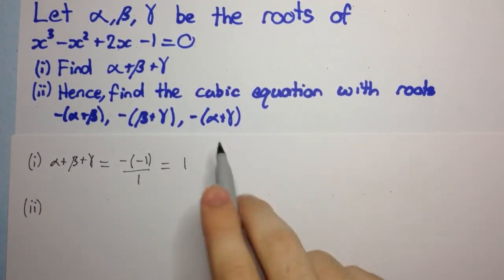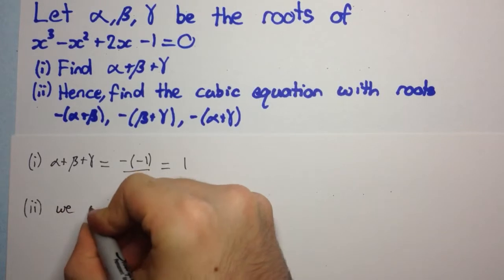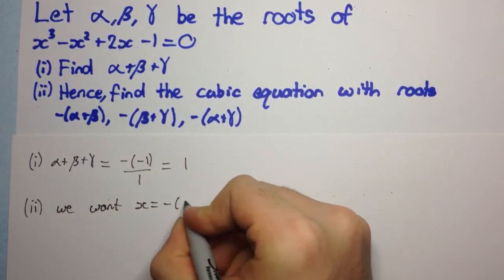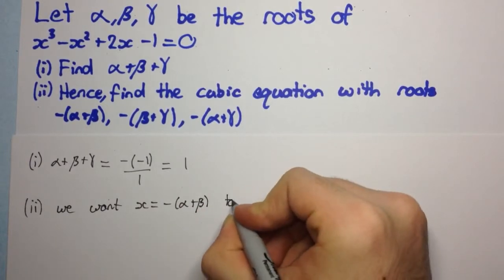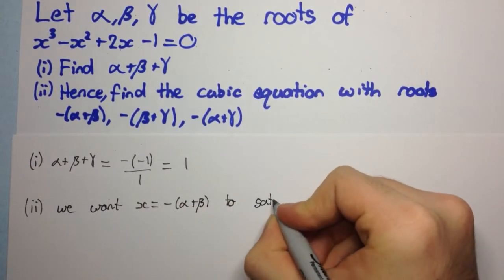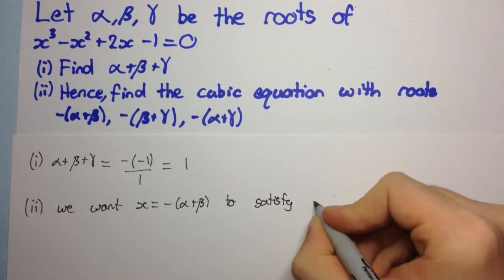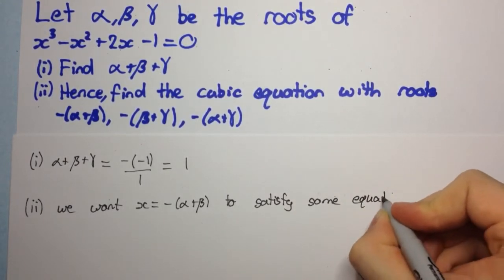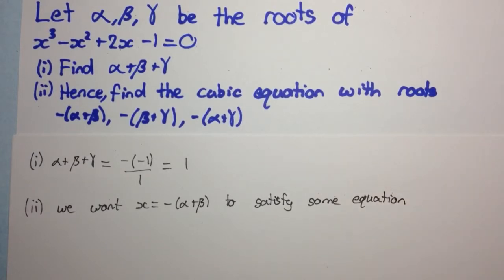So, what are we actually trying to find? We're trying to find a cubic equation with these roots. So, we want x equal to minus 1 outside of alpha plus beta to satisfy some equation. And we need to determine this equation.